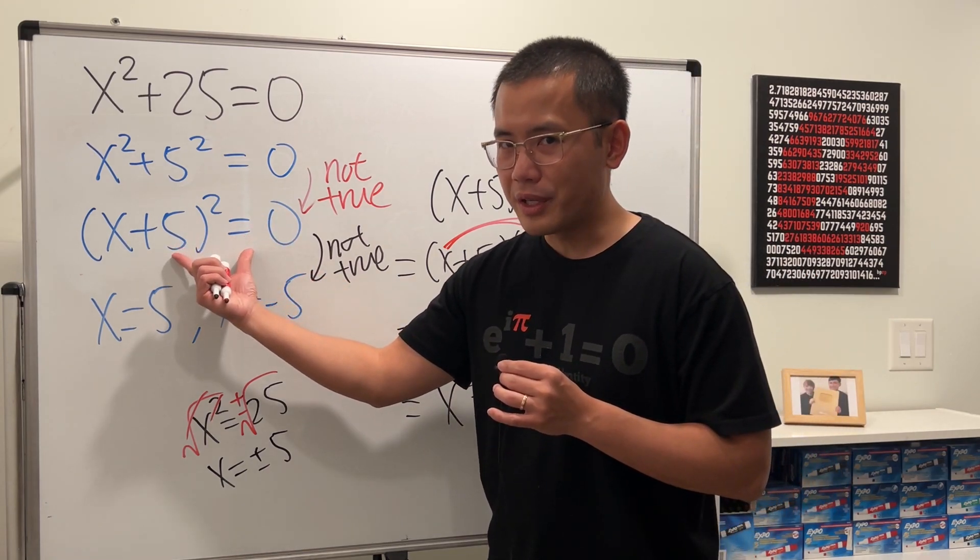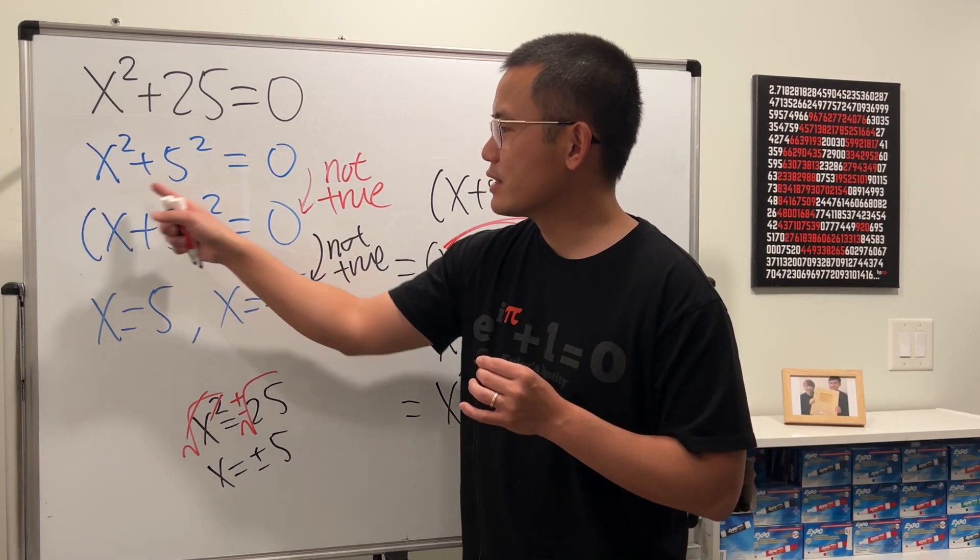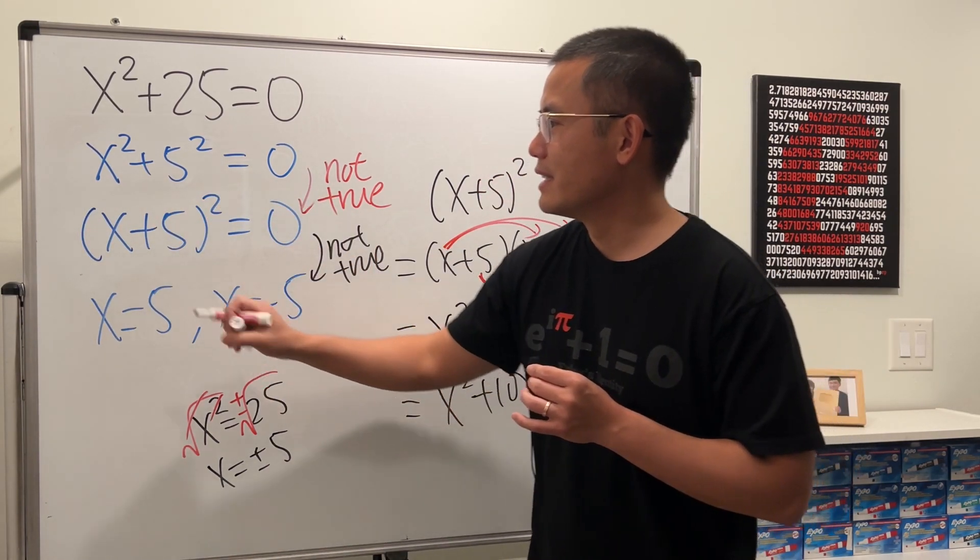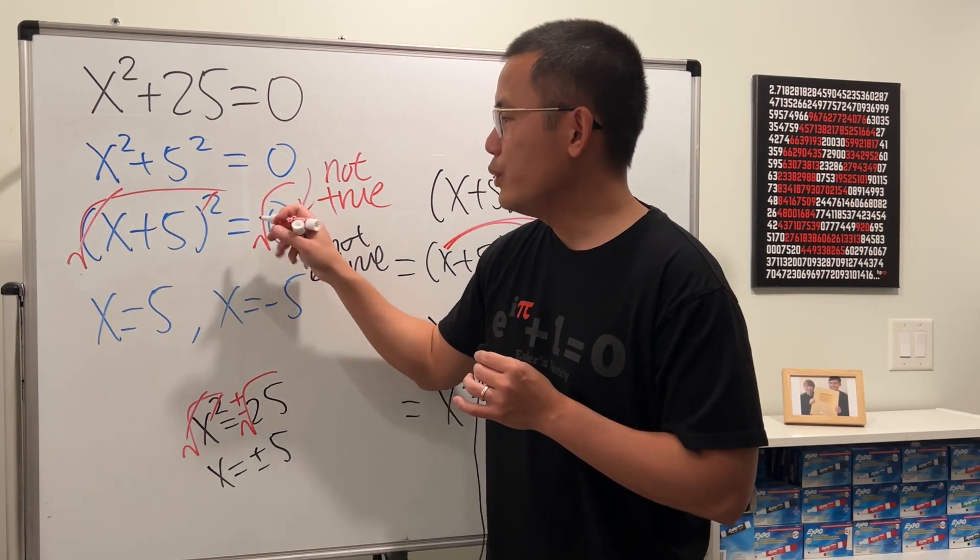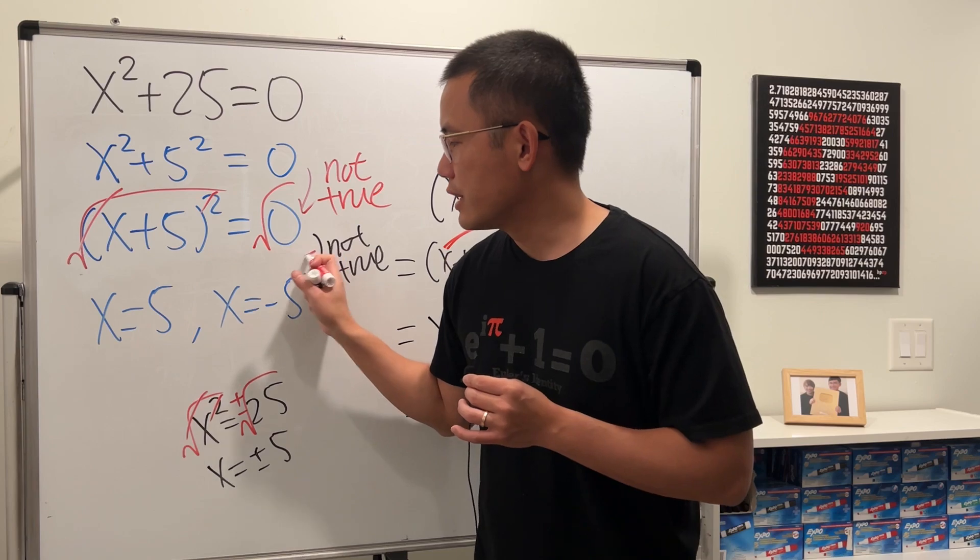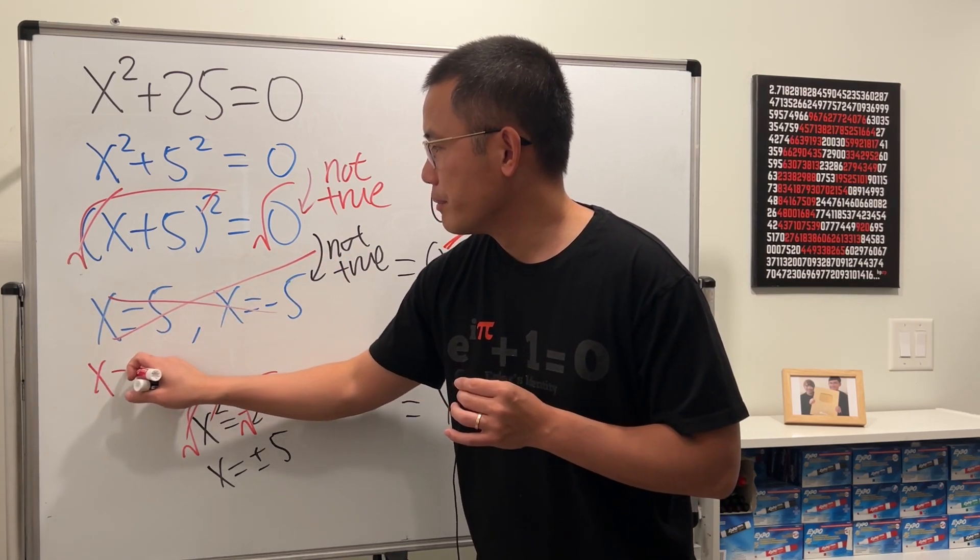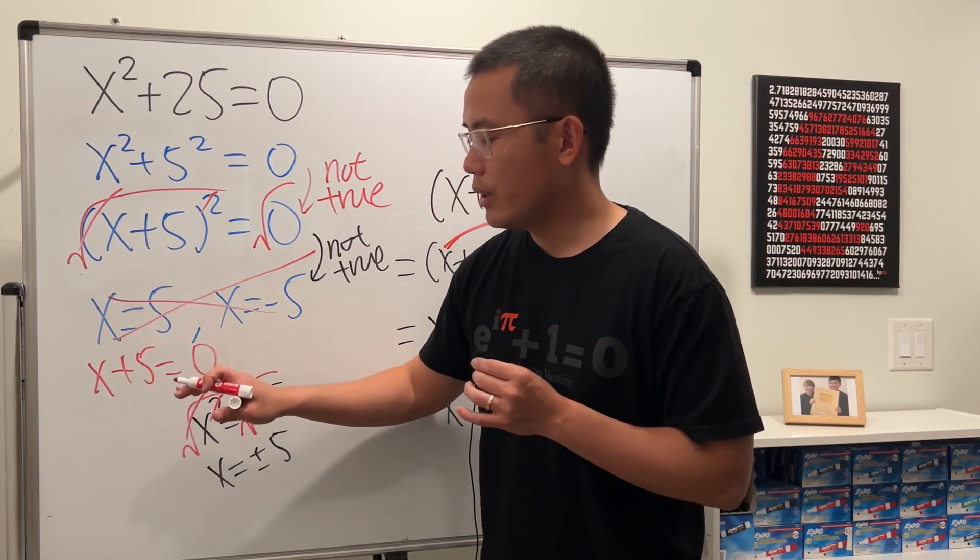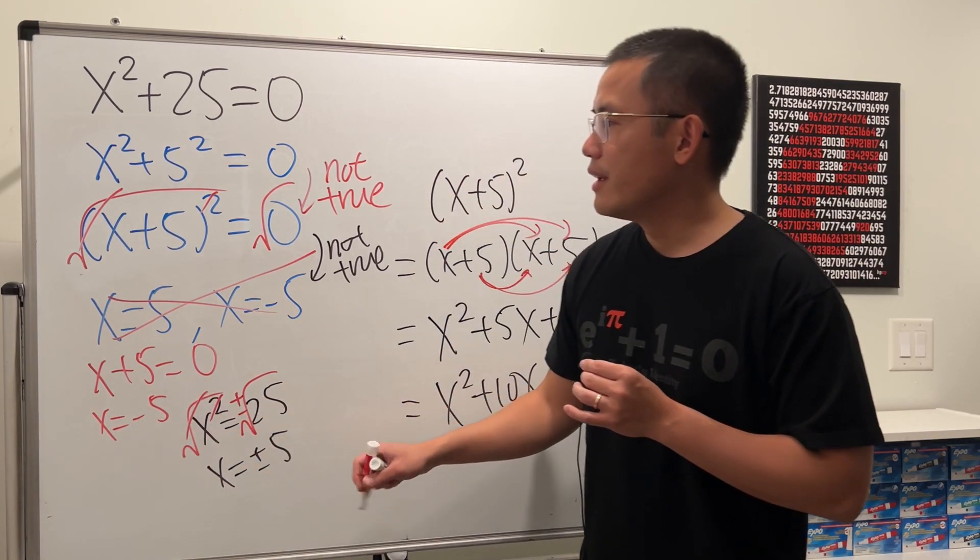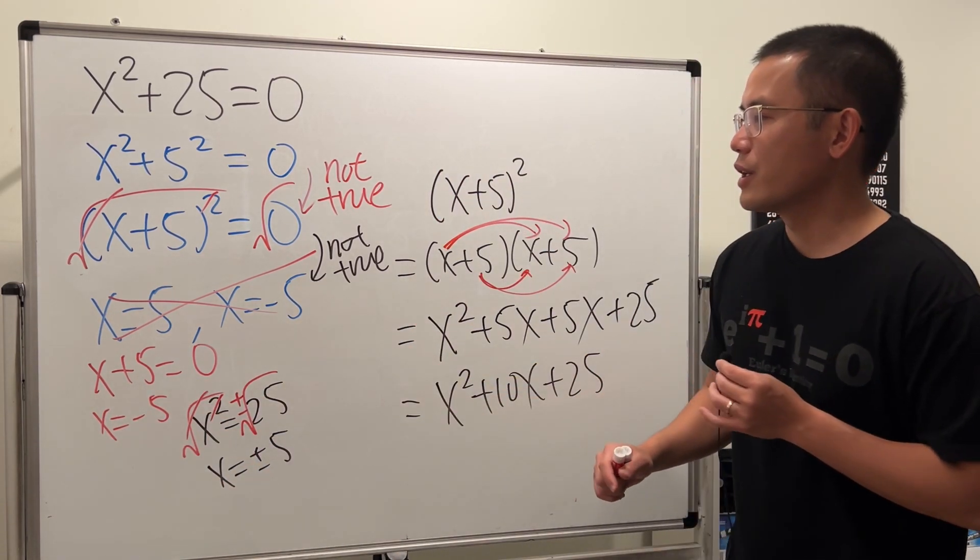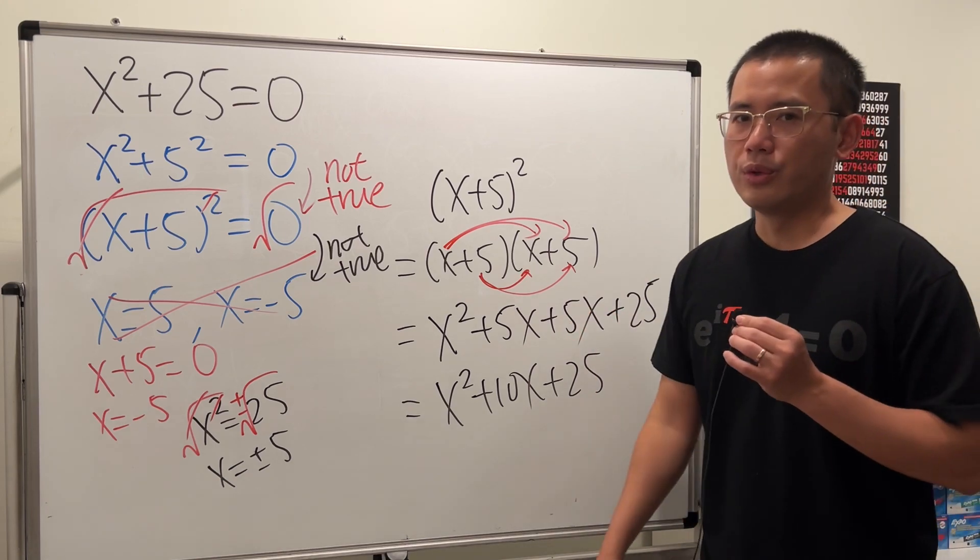But when we have this right here, you will have to take the square roots on both sides first. And this and that will cancel. You will just have 0. And then you will just get x + 5 = 0, and you end up with just one answer, x = -5. So there are a few things that went wrong right here.